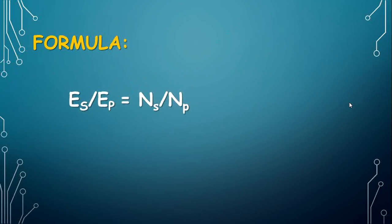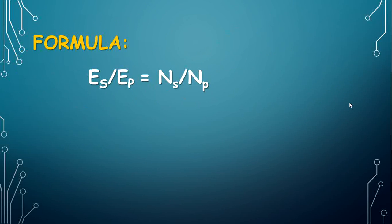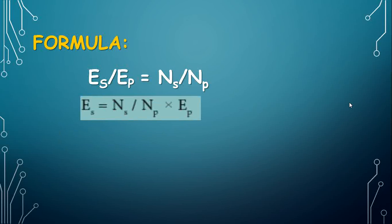Formula: ES by EP is equal to NS by NP. Here ES is output voltage, EP is input voltage, NS is number of turns in the secondary coil, and NP is number of turns in the primary coil. From this formula we can find the output voltage: ES is equal to NS by NP into EP.